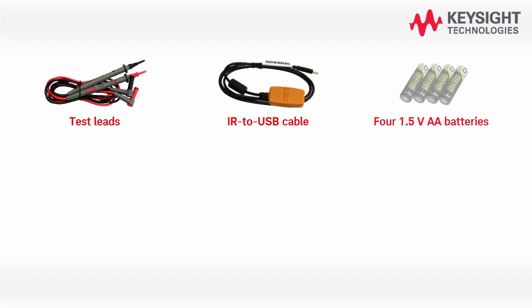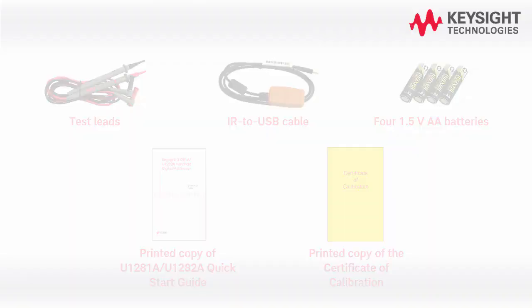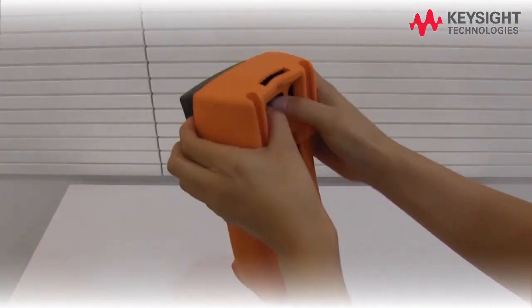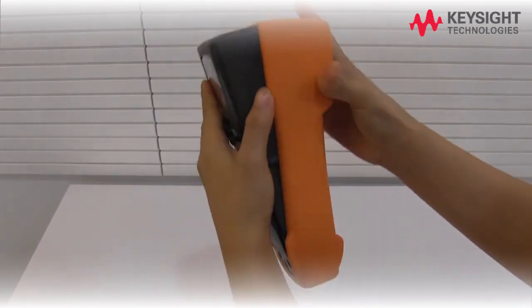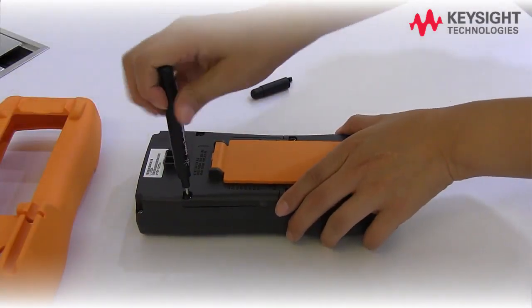When you purchase the multimeter, you will receive the followings. The U1281A/U1282A is powered by four 1.5 volt AA batteries. Let's start by installing the batteries to the meter.